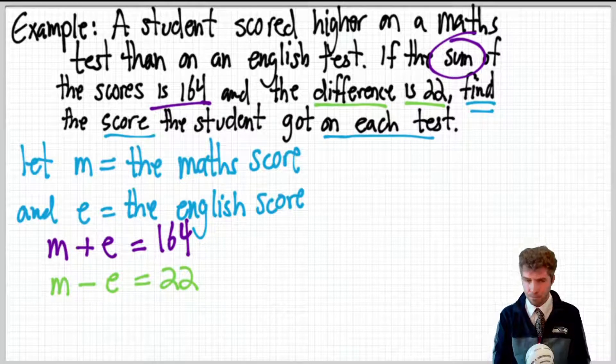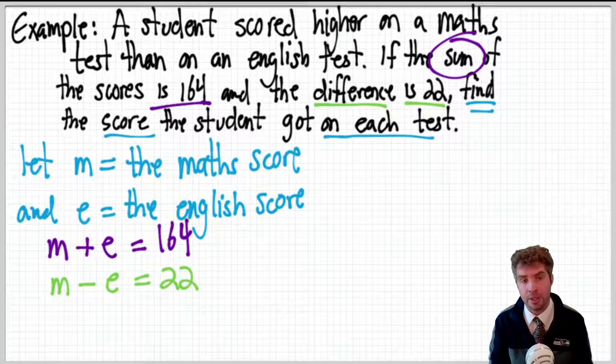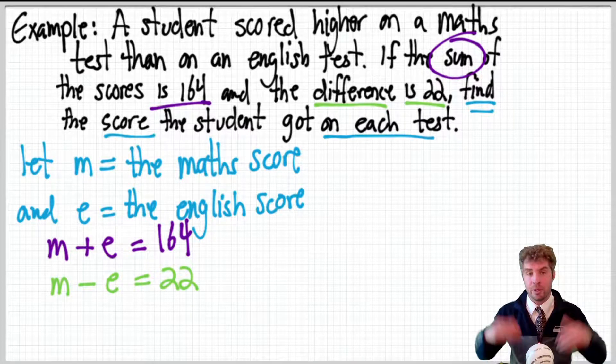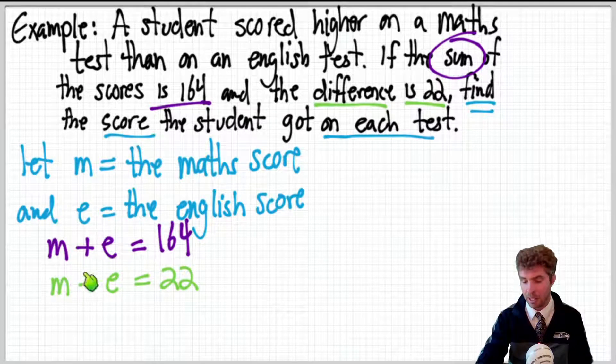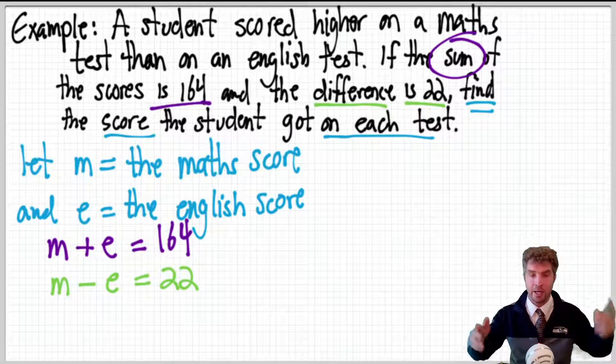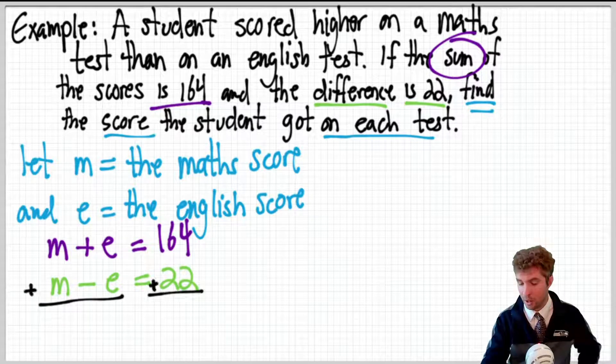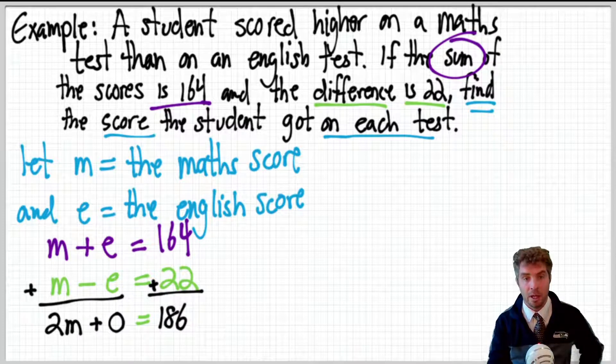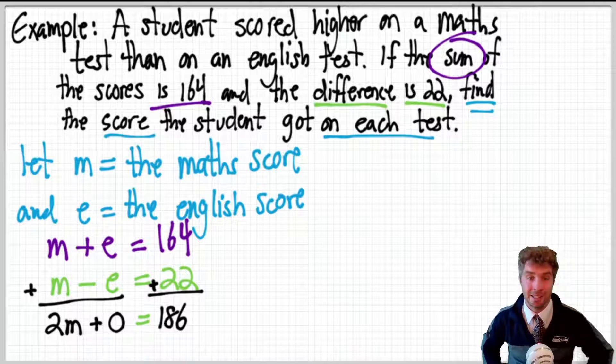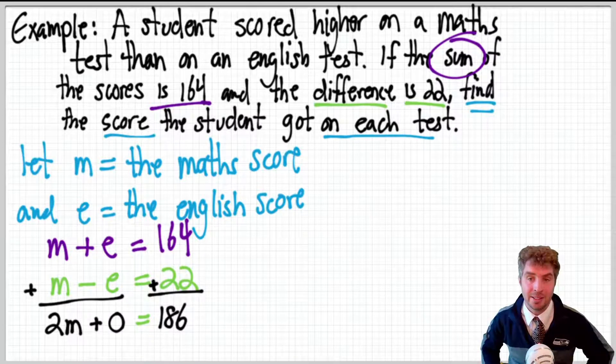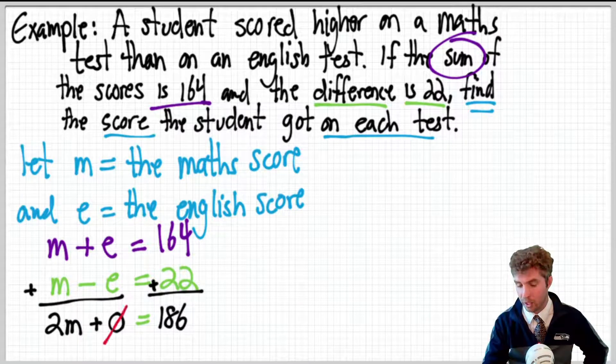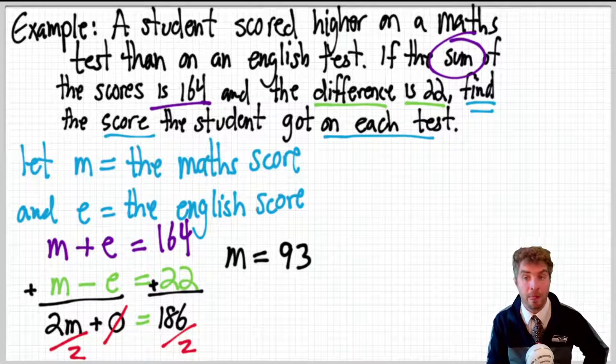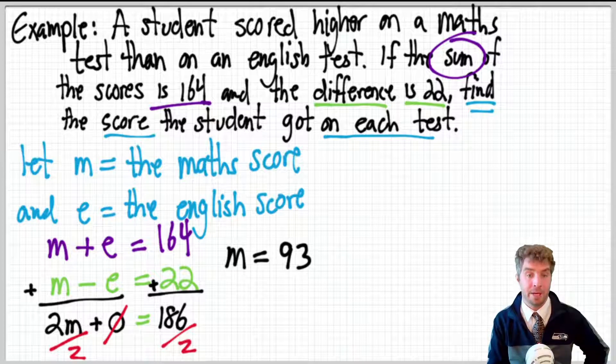So, now we can just solve these. I'm going to do this by hand, and I'm going to use a process called elimination because it's actually really easy with a set of equations like this. I'm going to add everything down the line. The M's are lined up, the E's are lined up, and the numbers are lined up. So, I'm just going to actually add everything together. So, M plus M is 2M. Positive E plus negative E is 0E, so nothing. So, 2M plus 0, and then 164 plus 22 is 186. So, we get 2M plus 0 equals 186, and the 0 doesn't do anything, so we can kind of get rid of that, and then divide by 2, and we get M equals 93. So, that actually tells us one of our test scores. They scored 93 on the maths.